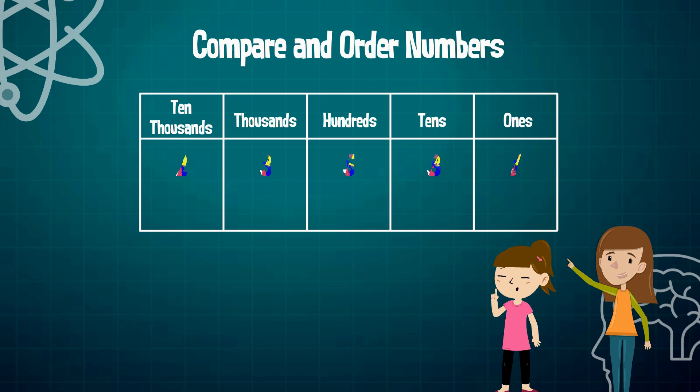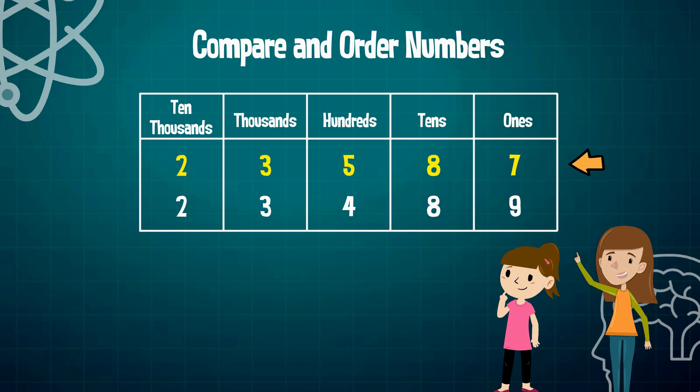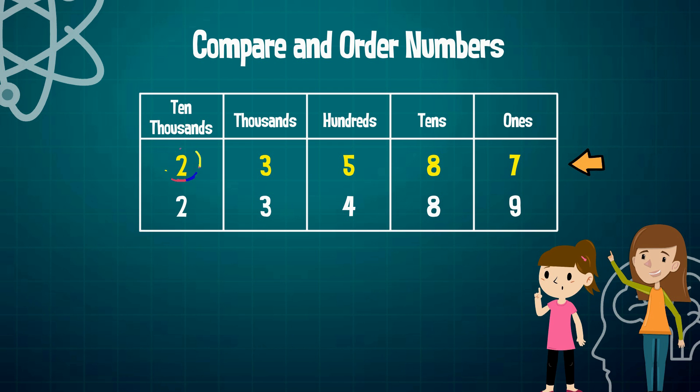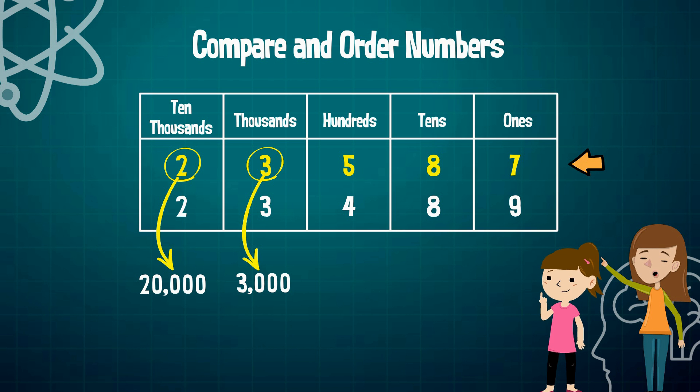Let's compare the number 23,587 with 23,489. We're going to begin by representing each number in expanded form. If we were to identify the value of each digit within 23,587, I know that 2 has a value of 20,000 because it is in the 10,000th place. 3 has a value of 3,000 because it is in the thousandth place.